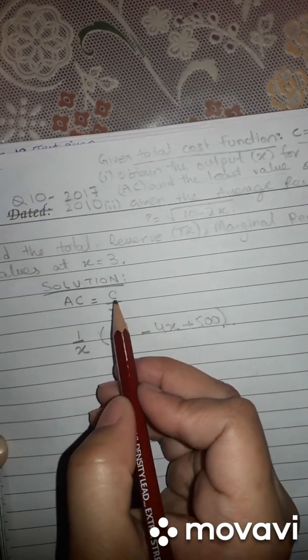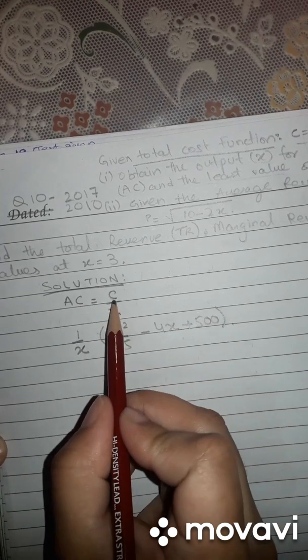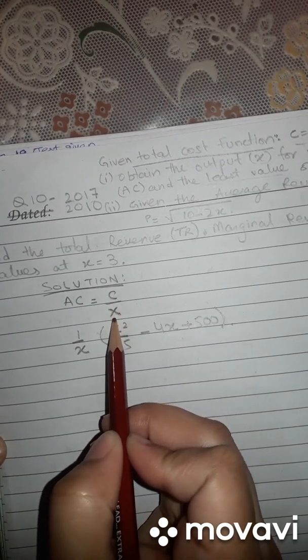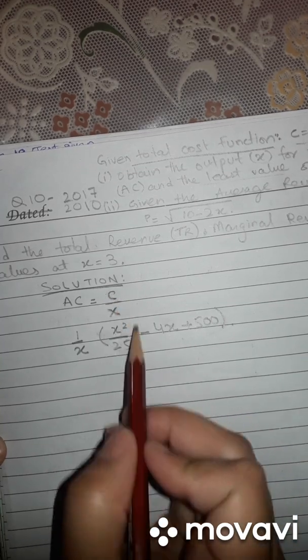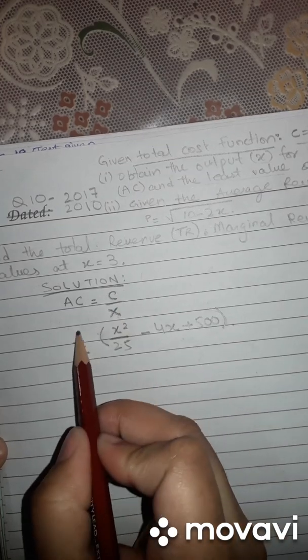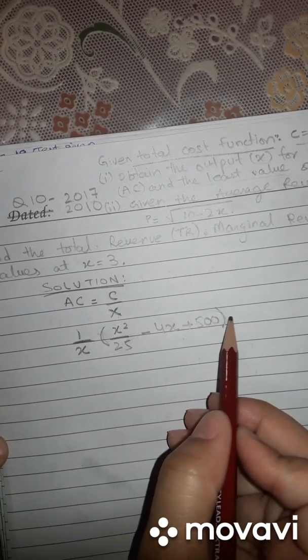Now what we have done, we have put over here in this formula, we have put C. C is total cost function upon X. So what we have done, total cost function was given in this form, so we have done 1 upon X. We have written 1 upon X and C is written over here.